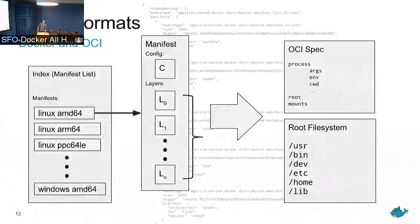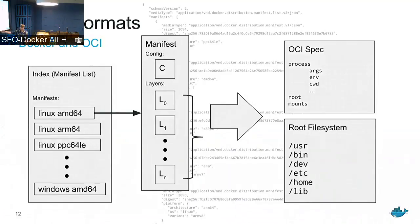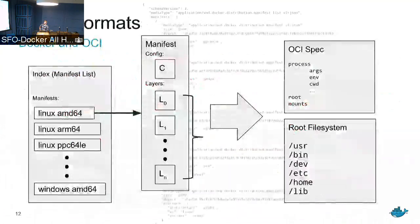This slide shows the concept of going from the structure of Docker and OCI images into an OCI spec and a root filesystem. We have an index or manifest list, and then a manifest. Inside a manifest we have various different kinds of architectures of images that we can point at, and each one can point at its own manifest with its own config and own set of layers, which can all be converted to a root filesystem in an OCI spec.